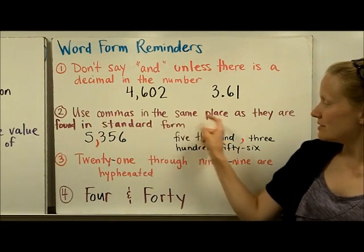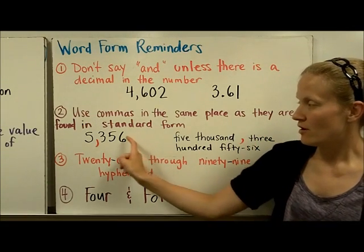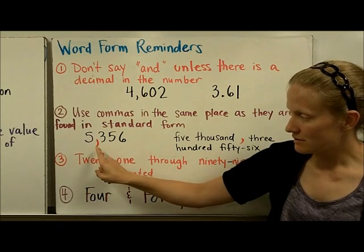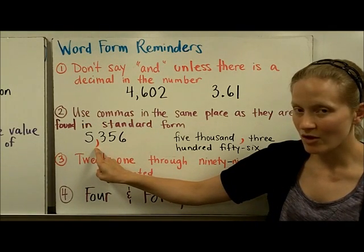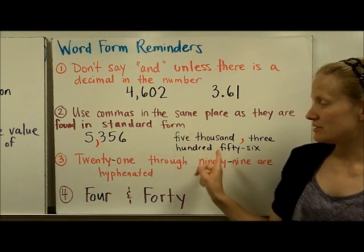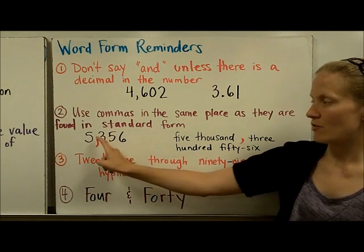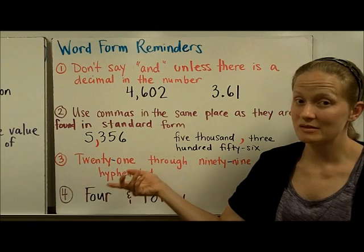Number two: make sure you use commas in the same place as they are found in standard form. Remember, standard form is number form, and so when you're going to write this, where this comma falls in the number, make sure you place it in your written form. So 5,000, and then I put that comma right after it because it's in the same place as it's found in the number.